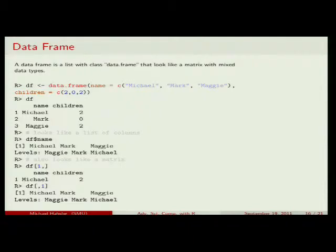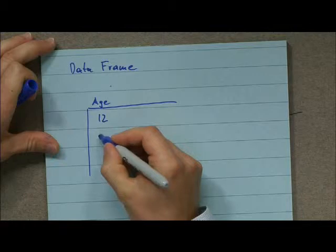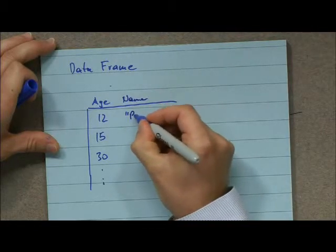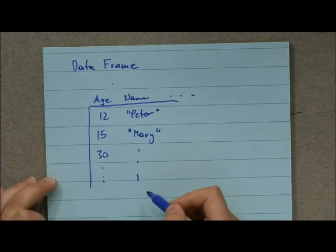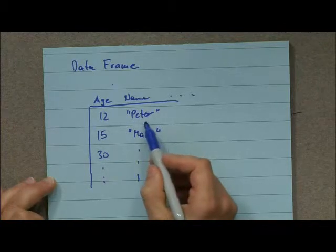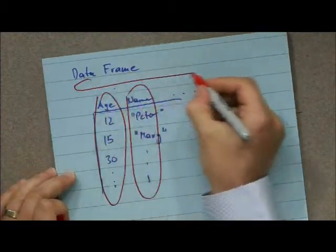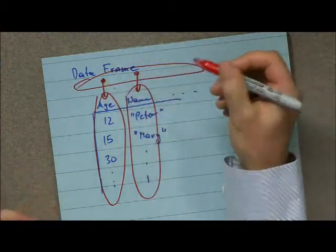A data frame is internally just a list of columns — first column, second column, third column — where each element of the list can have its own data type. The data frame enforces that all those column vectors have exactly the same length, so you can't have more names than ages.